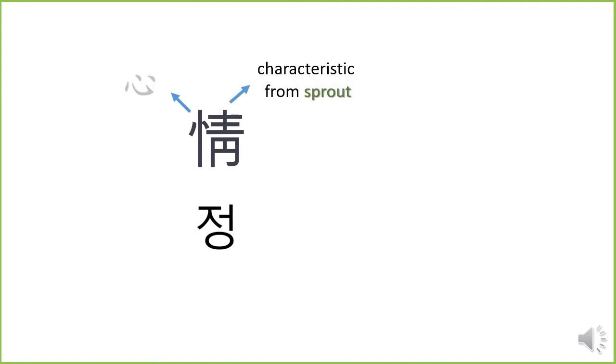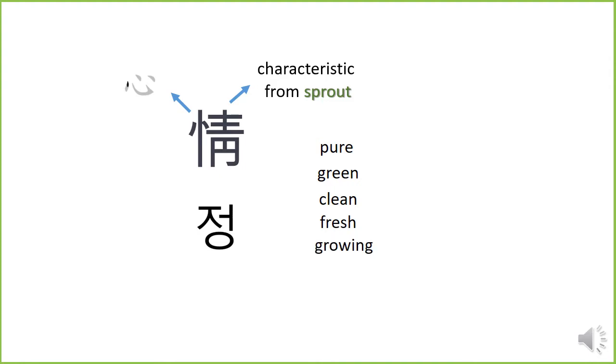정 in Chinese character has two words in it. This one means heart, mind. This one means characteristic from sprout. It has meaning of pure, green, clean, fresh, growing — just like the little tiny sprout.